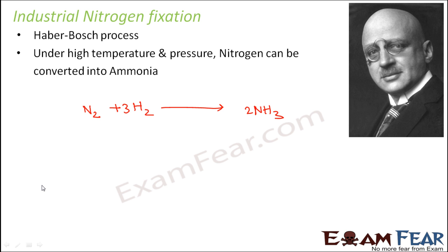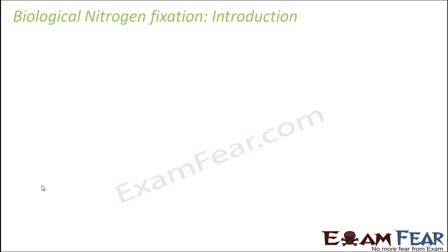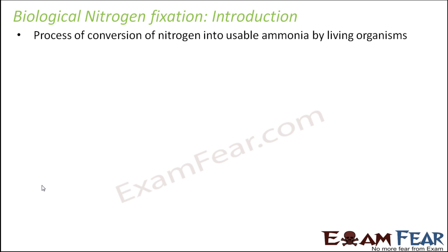However, there were disadvantages of the Haber-Bosch process. It caused a lot of contamination to surface water and groundwater, and also caused atmospheric pollution. Because of these negative impacts on the environment, this process was not much encouraged for nitrogen fixation. Thereafter came biological nitrogen fixation, which was an extremely helpful process — the conversion of nitrogen into usable ammonia by living organisms.